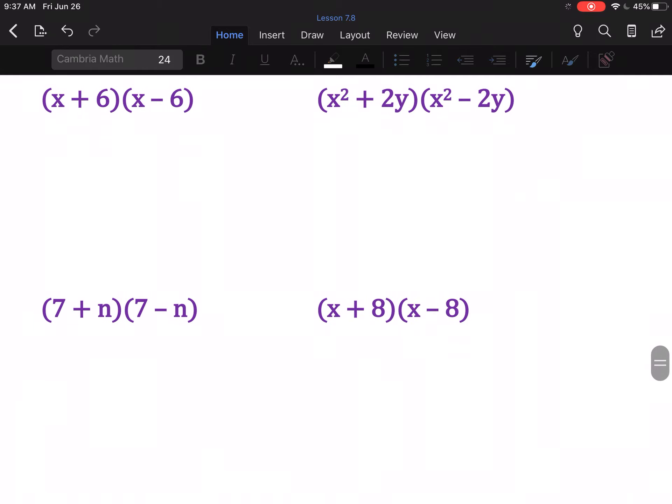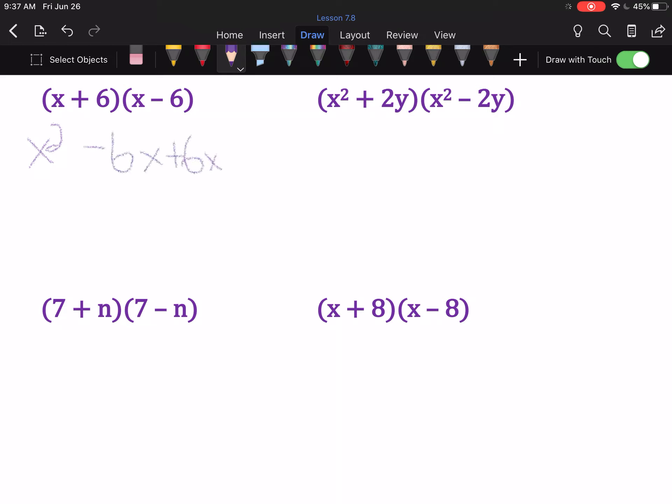These now are going to be differences. So, (x+6)(x-6). You FOIL those. First is x². Outer is -6x. Inner is positive 6x. Last is -36. The -6x and positive 6x will cancel out.